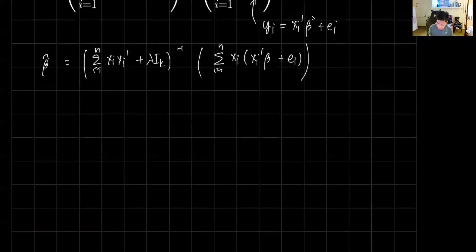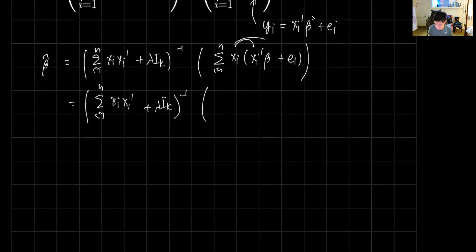Then we can simplify this side of the equation: sum i equals 1 to n x i x i prime plus lambda i k inverse. Then we just distribute this to that. So we get sum i equals 1 to n x i x i prime beta plus sum i equals 1 to n x i e i.